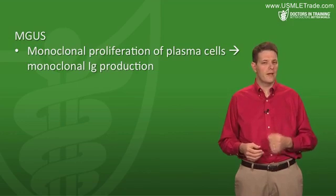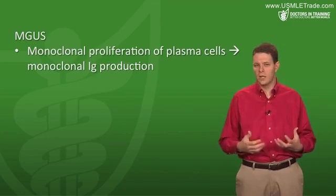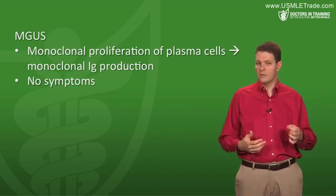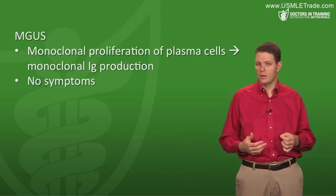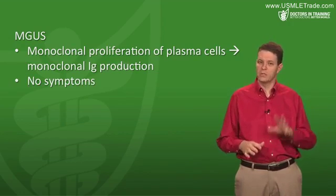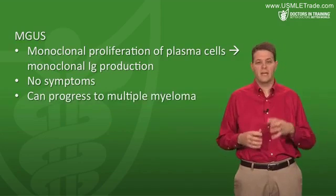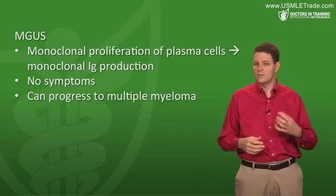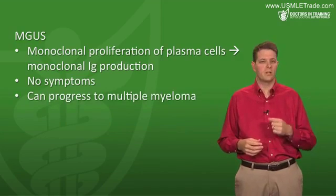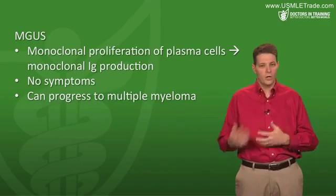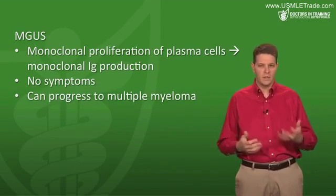There's also a precursor to multiple myeloma called MGUS, or monoclonal gammopathy of undetermined significance. This is a monoclonal proliferation of plasma cells producing lots of monoclonal immunoglobulins, but without the end organ damage of full-blown multiple myeloma. MGUS can progress to myeloma, so these patients need to be closely monitored, and treatment begins when it converts to myeloma.